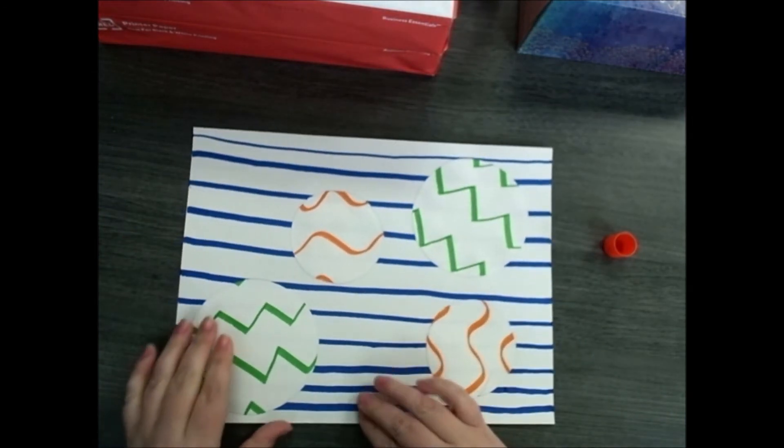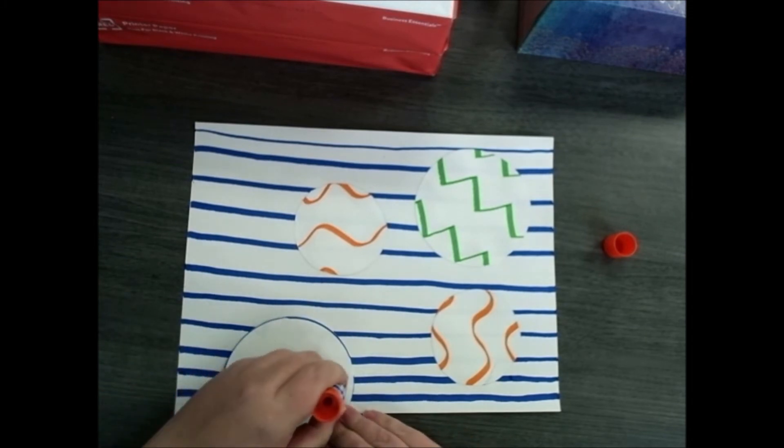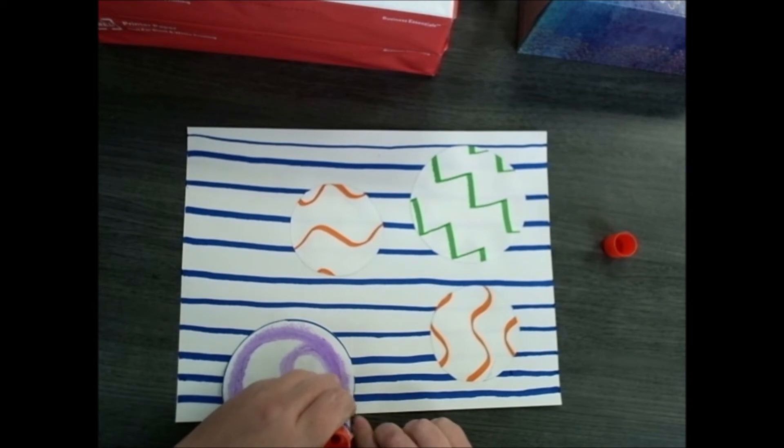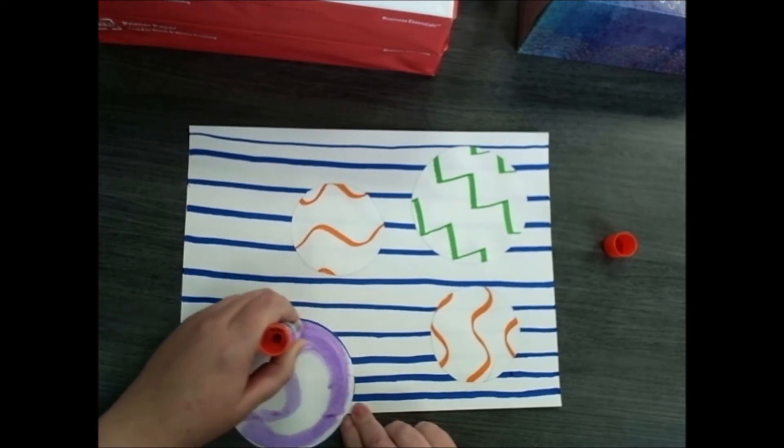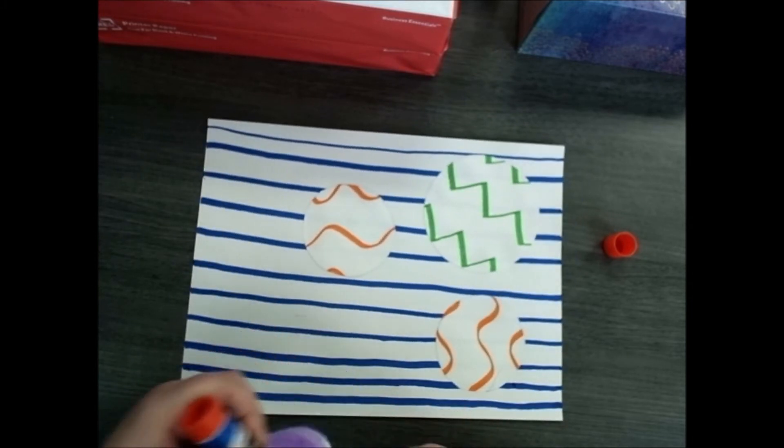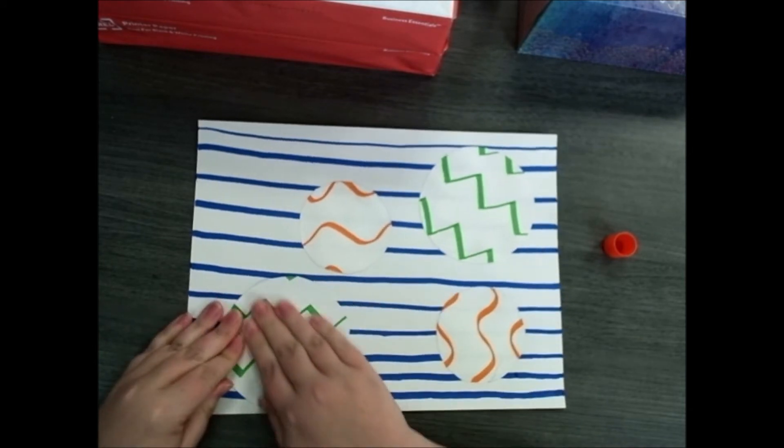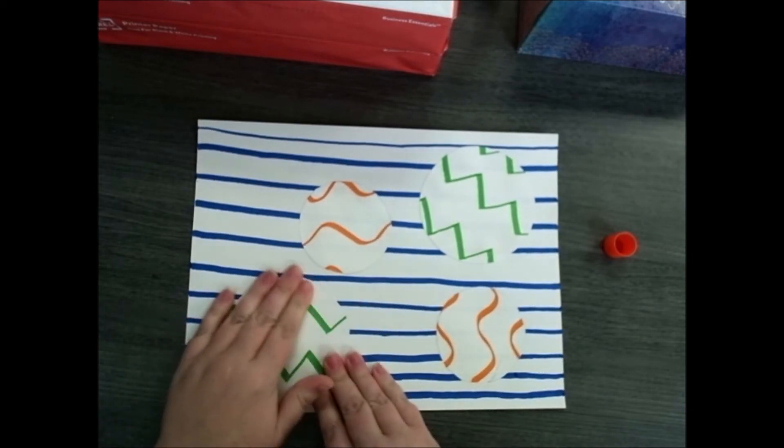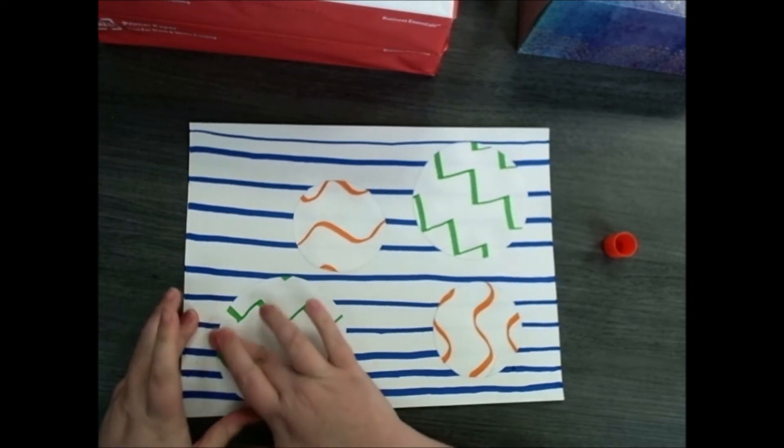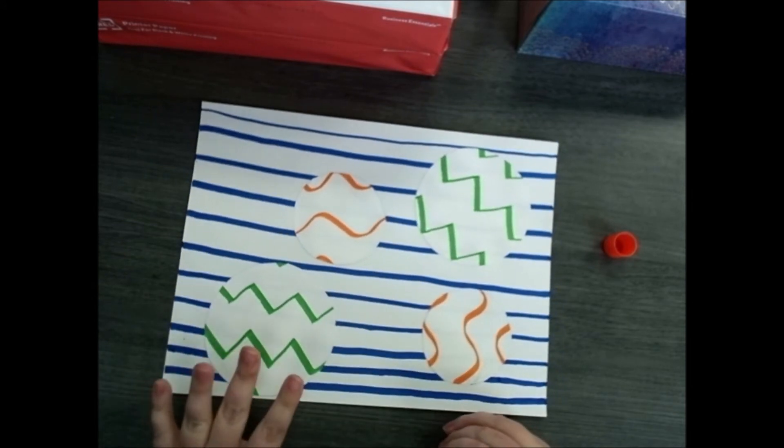All right. I have one more and then I think we're going to do one extra thing to this picture just to really show off the contrast. So I'm going to glue on my last one. Last bubble. All right. So my last bubble is glued on so we have the four bubbles on the lined paper.